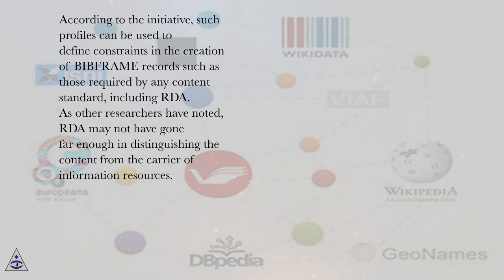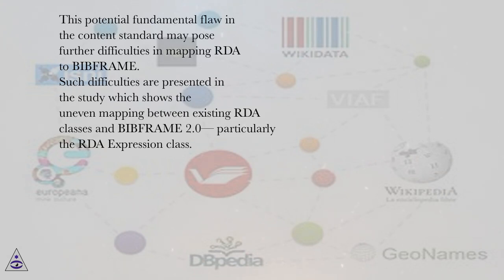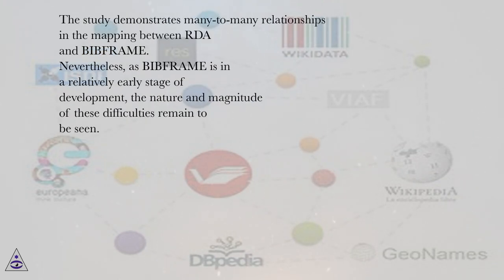As other researchers have noted, RDA may not have gone far enough in distinguishing the content from the carrier of information resources. This potential fundamental flaw in the content standard may pose further difficulties in mapping RDA to BIBFRAME. Such difficulties are presented in a study which shows the uneven mapping between existing RDA classes in BIBFRAME 2.0, particularly the RDA expression class. The study demonstrates many-to-many relationships in the mapping between RDA and BIBFRAME. Nevertheless, as BIBFRAME is in a relatively early stage of development, the nature and magnitude of these difficulties remain to be seen.